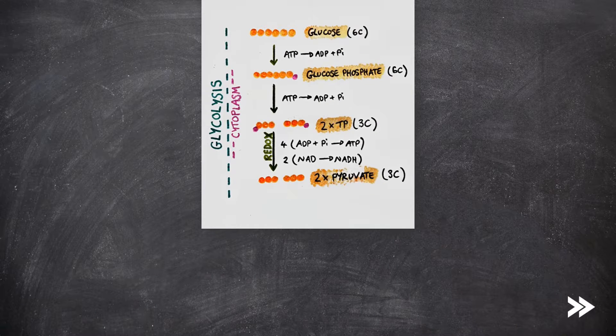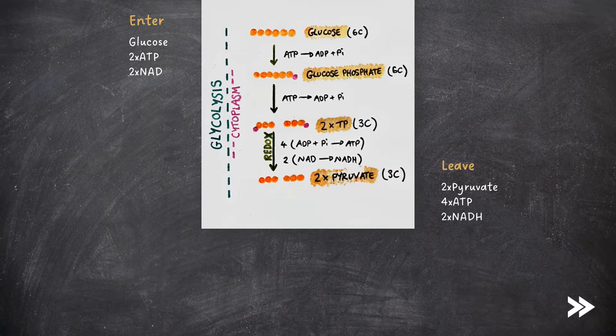So, overall, in glycolysis, we started off with glucose, two ATP and two NAD molecules, and we are left with two pyruvate molecules, four ATP and two NADH molecules.